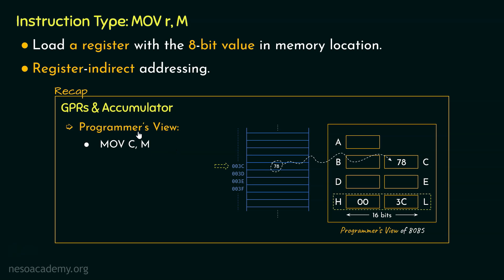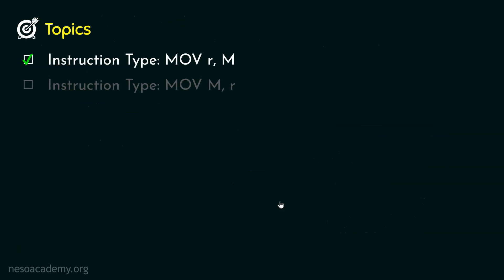Remember, whenever we use the alphabet M in any instruction, it indirectly refers to the HL pair which is supposed to hold the address. Specifically in the case of this instruction, the content within that address will be loaded into the specific register mentioned in the instruction — as you can see, the value 78 was loaded into the C register. So that was all about the instruction type MOV R,M. There are 7 different instructions of this type, and this instruction falls under the 1-byte long category.